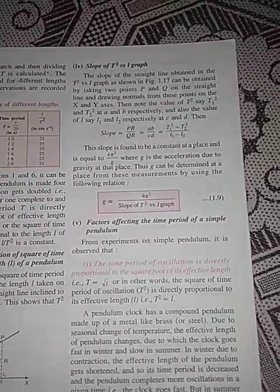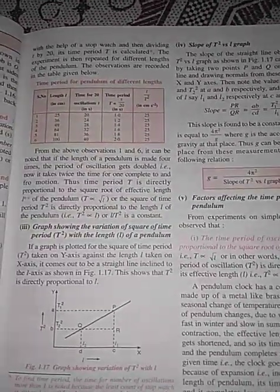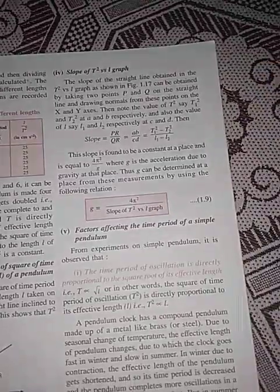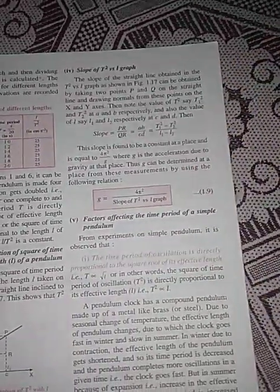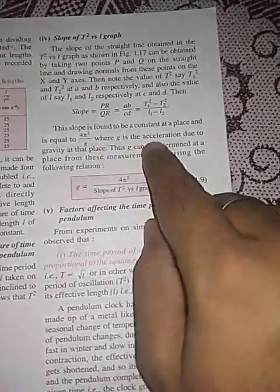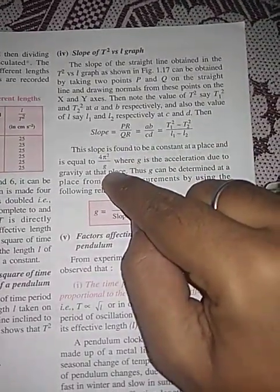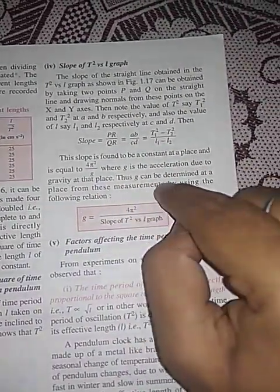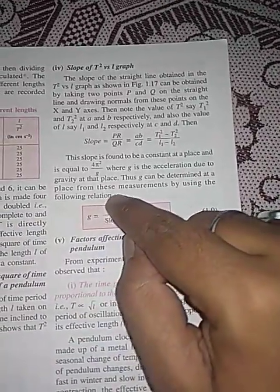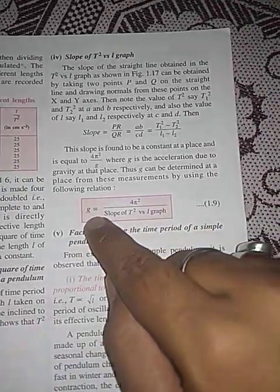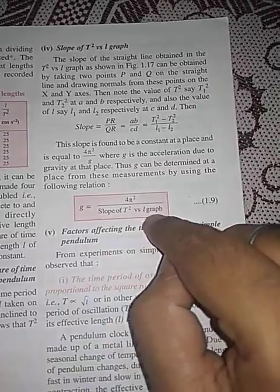Although this is the experimental part of the simple pendulum, we need to know about this graph and these relations for exam purposes. During the experiment, the slope is found to be constant at a place, equal to 4π²/G, where G is acceleration due to gravity. Thus G can be determined at a place using the relation: G = 4π² / (slope of T² versus L graph).